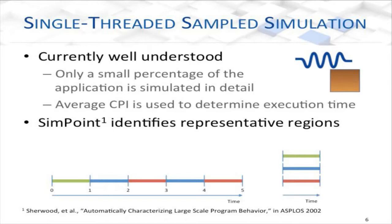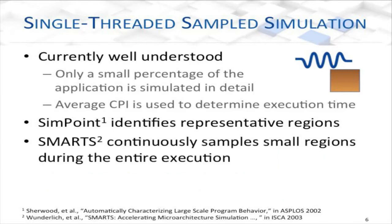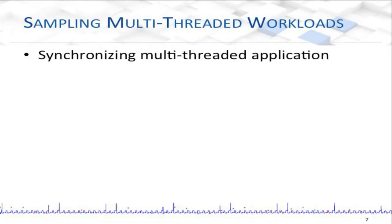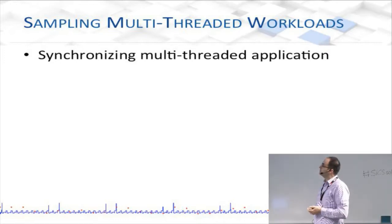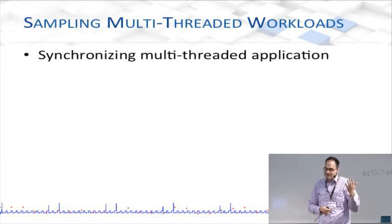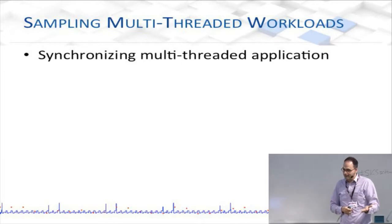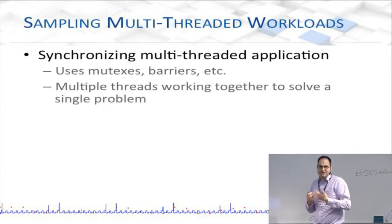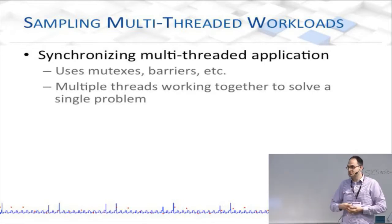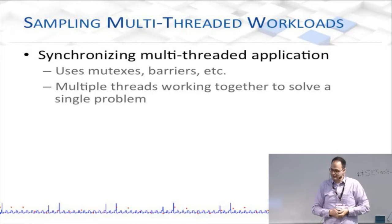SMARTS is a similar methodology. Instead of identifying the representative regions ahead of time, you periodically sample the application over time. Now here's the problem: applications for multi-core systems are multi-threaded and synchronizing. They are OpenMP-style applications that use mutexes and barriers, working together to solve a common problem — maybe conjugate gradient, maybe FFT, something like this.